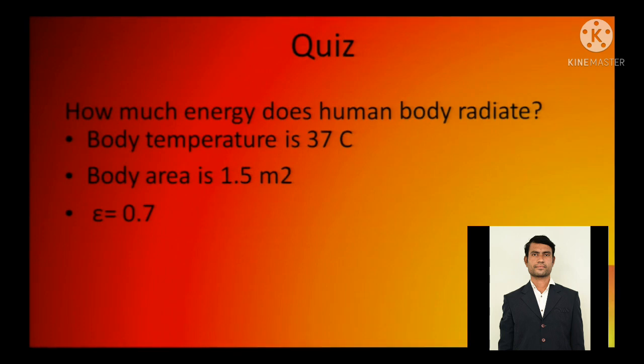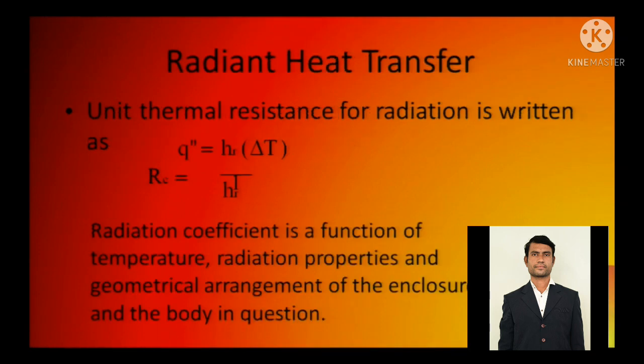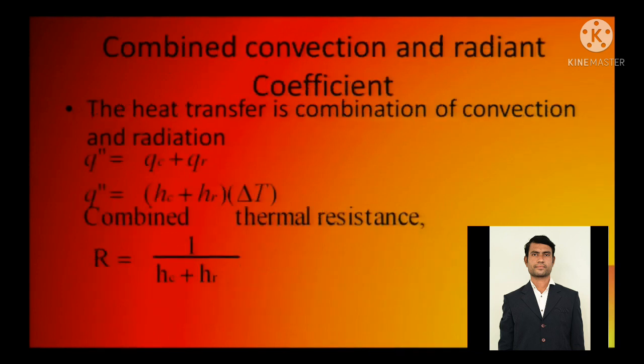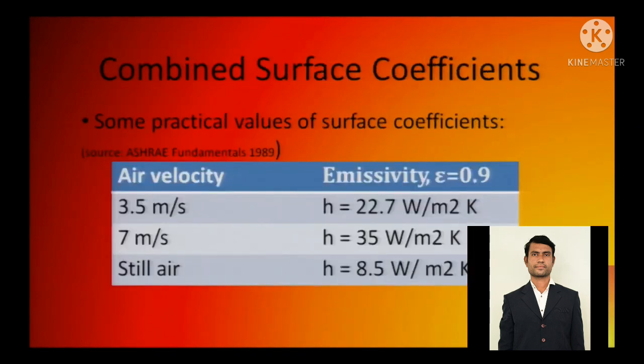Quest: how much energy does human body radiate? Body temperature this much, body area this much and emissivity - this numerical you can do. Radiant heat transfer unit thermal resistance for radiation is written as, it's just the same thing as we have already done. So this is the convection, this is the combined radiation that is hc plus hr. So r equals 1 by hc plus hr. hc is convection, hr is radiation. These are certain emissivity values, these are the certain h values for emissivity of 0.9 and air velocity of this.